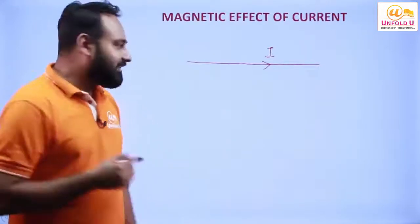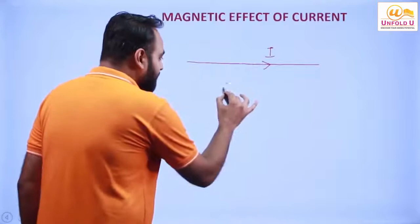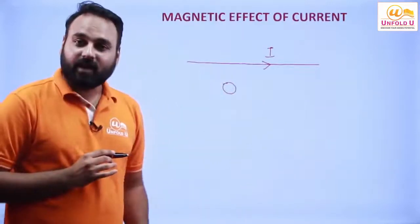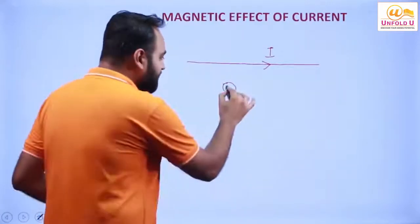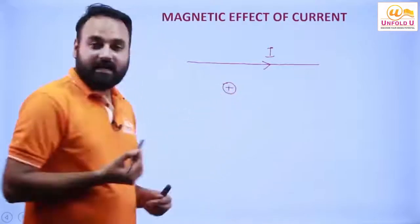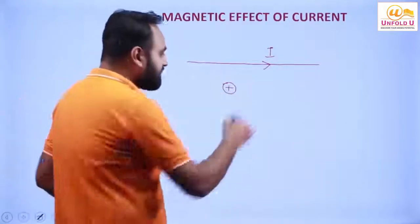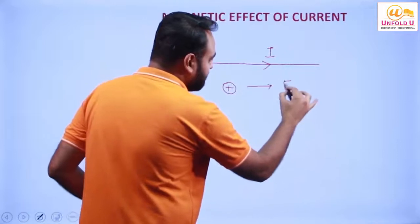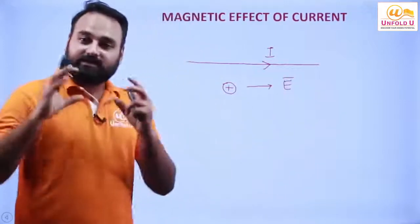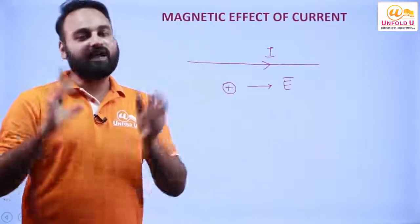And why is this? This is because when we had electrostatics, a charge is at rest. And when it is at rest, then it produces electric field. Always remember, the charge when it is at rest will produce electric field.